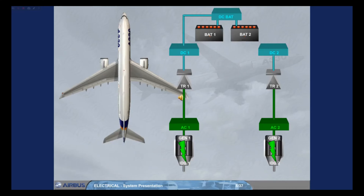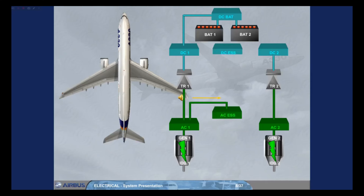The electrical system also includes two essential buses. The first one is the AC essential bus, fed by AC bus 1. The second one is the DC essential bus, fed by the AC bus via the essential transformer rectifier.